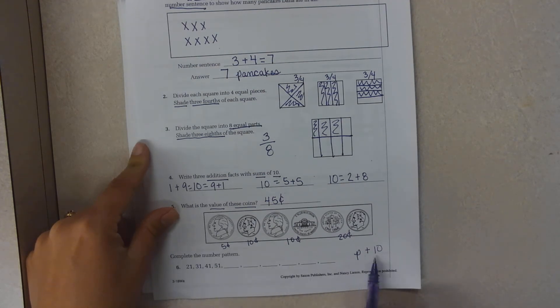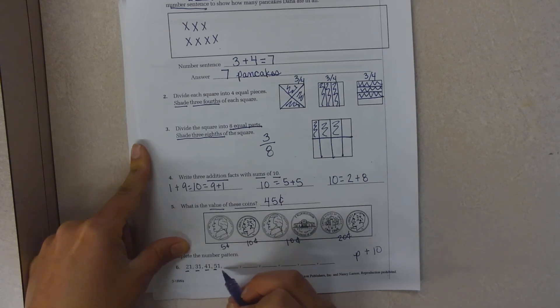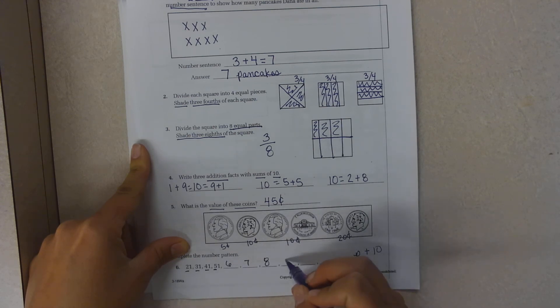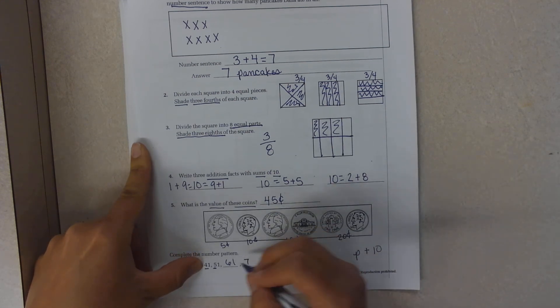So the only number that's going to change is the number in the tens place. So it goes two, three, four, five, six, seven, eight, nine, ten, eleven, and you're going to keep your ones place the same.